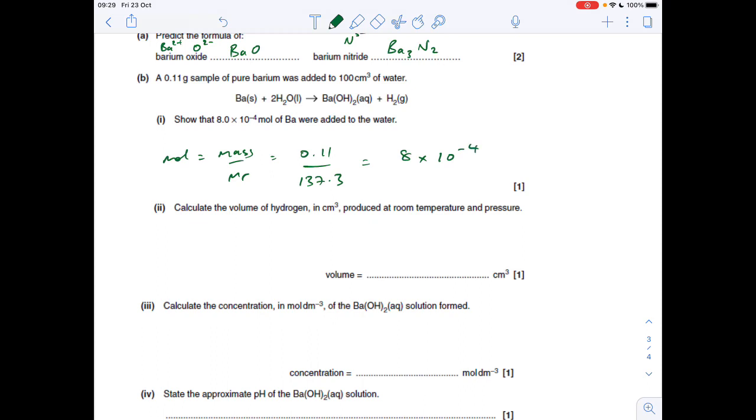Next part: calculate the volume of hydrogen in cm cubed produced at RTP. The moles of barium we know will give us the same moles of hydrogen: 8 times 10 to the minus 4 moles. The volume is moles times 24,000 if we want the answer in cm cubed, and that comes out at 19.2.